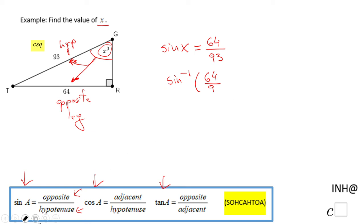The calculator will give us the angle for which the sine is 64 over 93. That is an angle of 43.49 degrees. I rounded to the nearest hundredth, and that's it.